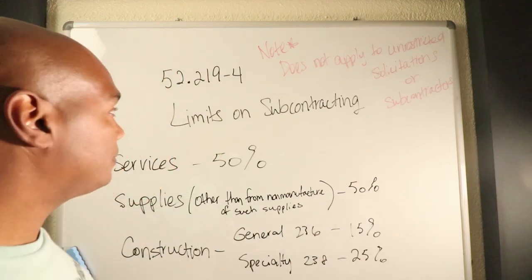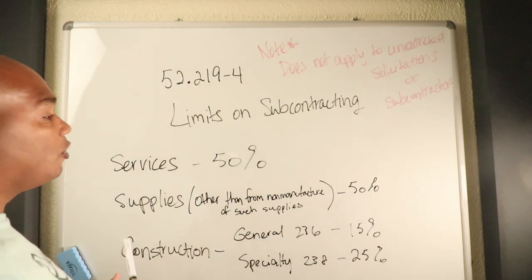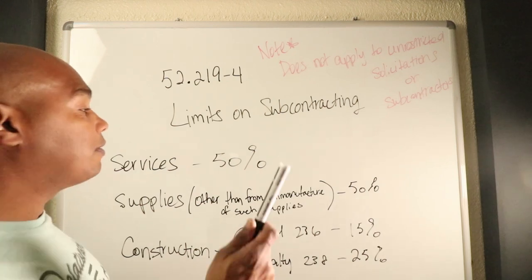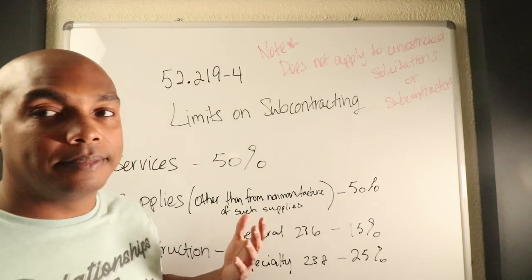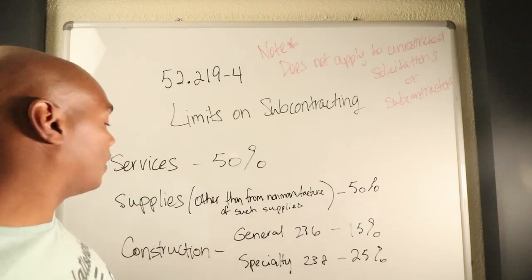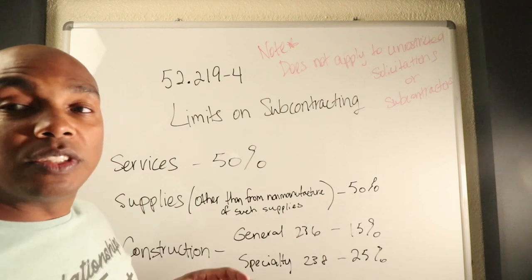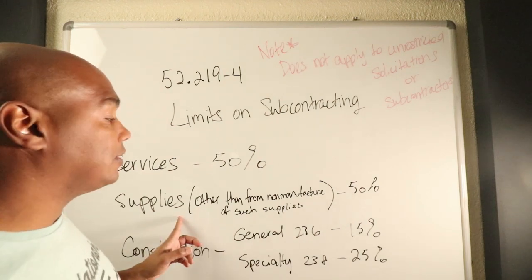The limits of subcontracting are very simple. It says if you provide a service, you have to perform 50% of the work. That's it. If you provide a service, you've got to perform 50% of the work.